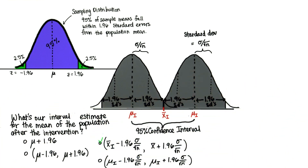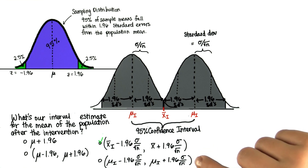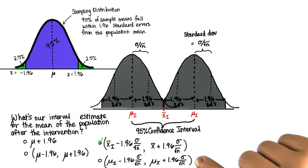But let's explore this one anyway. We can't even figure out what it is because we don't know this population mean after the intervention. So we're not able to compute this. If you selected this one, then you were pretty close.